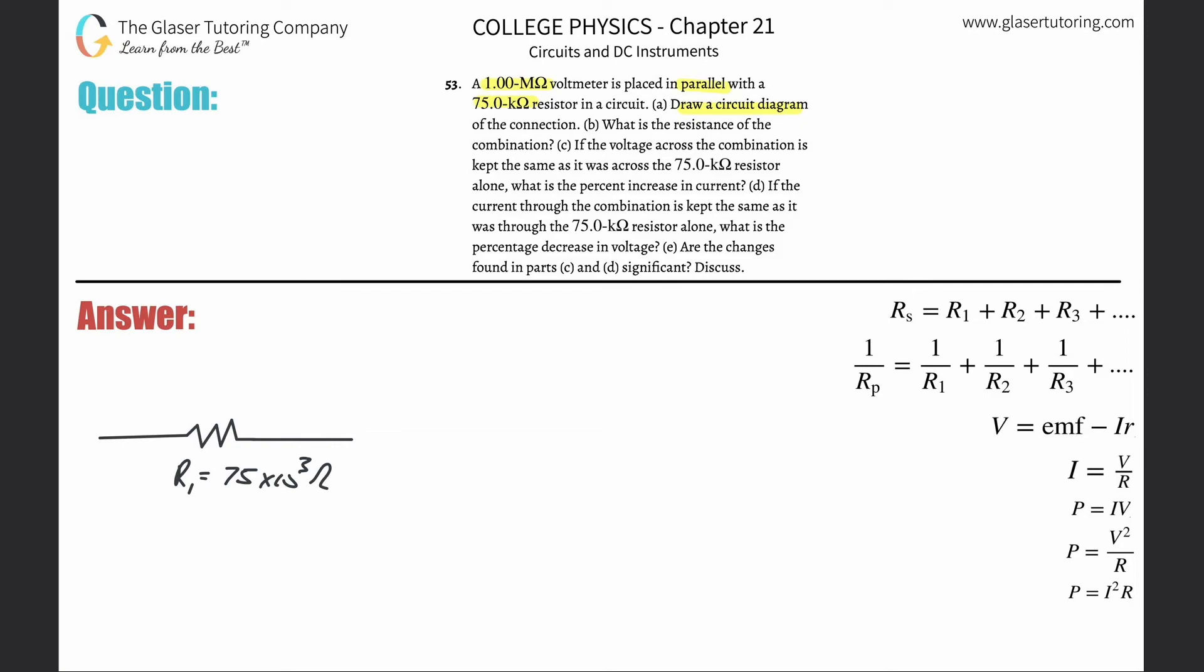This voltmeter is placed in parallel with this thing, so what that means is that I'm going to have this apparatus placed in parallel. Put a little V there, circle it, put a little V for voltmeter. And basically inside of this voltmeter now, we would have a resistance. Usually what they'll do is they'll show it over here, like separate. That's fine. I'm going to show it just kind of on top.